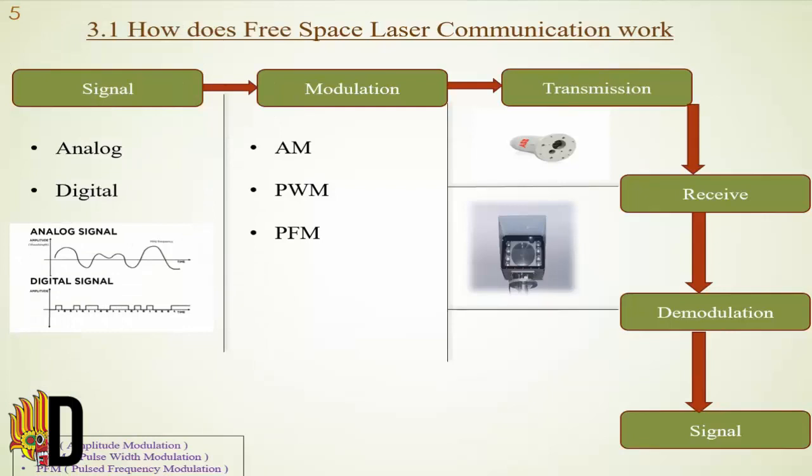Now let us see how free space laser communication works. First, a signal — this signal may be an analog signal or a digital signal — is subjected to modulation. In the modulation process, there are three main ways of modulation: AM (amplitude modulation), PWM (pulse width modulation), and PFM (pulsed frequency modulation). After the signal is modulated, the modulated signal is transmitted by a transmitter as a laser beam.